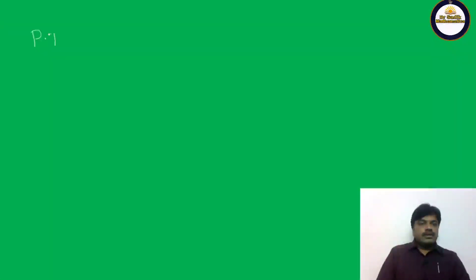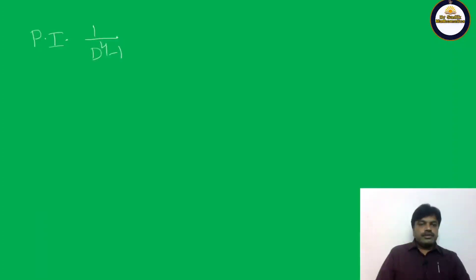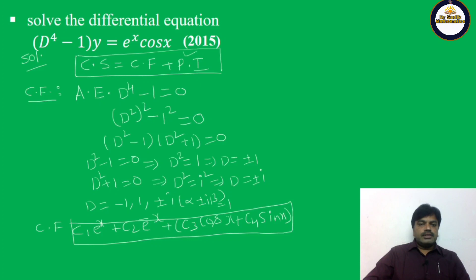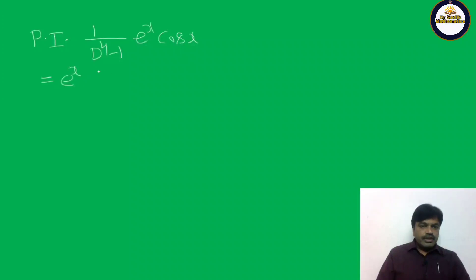Now the Particular Integral = (1/(D⁴ - 1)) · e^x cos x. This is like e^(ax) · v — Case 4. Write e^x on the left-hand side and replace D by (D + 1), since a = 1. So PI = e^x · [1/((D+1)⁴ - 1)] · cos x.